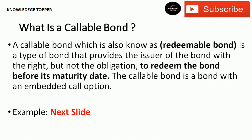First we look at the definition of callable bonds to get the general idea. A callable bond, which is also known as a redeemable bond, is a type of bond that provides the issuer with the right, but not the obligation, to redeem the bond before its maturity date. The callable bond is a bond with an embedded call option.